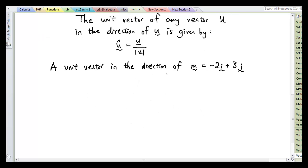A unit vector in the direction of vector m, where m equals -2i plus 3j. So I want you guys to get that done, and come back when you're done. Okay, so we're going to use the formula. Unit vector in the direction of m is equal to vector m divided by the magnitude of m. So the first thing we want is the magnitude of m.